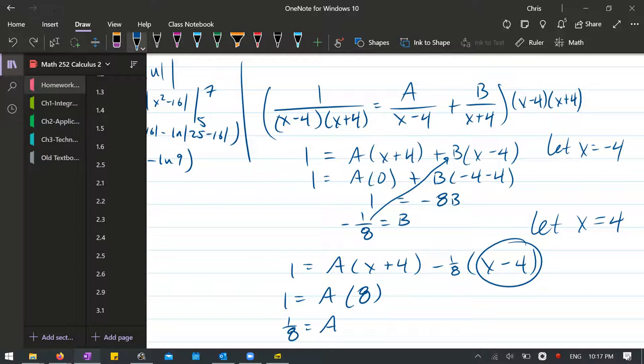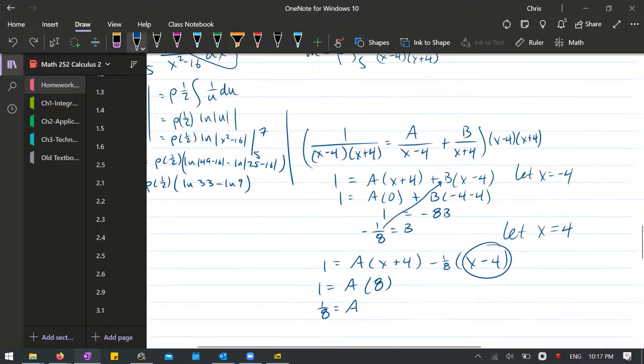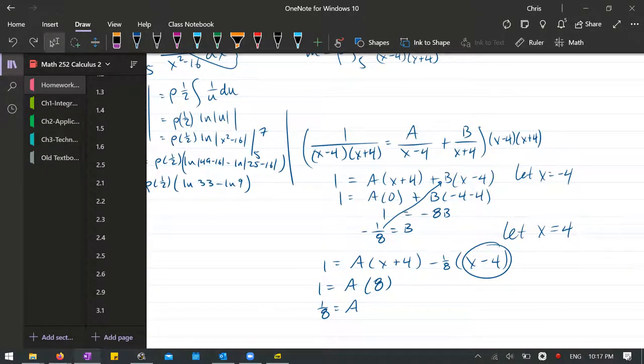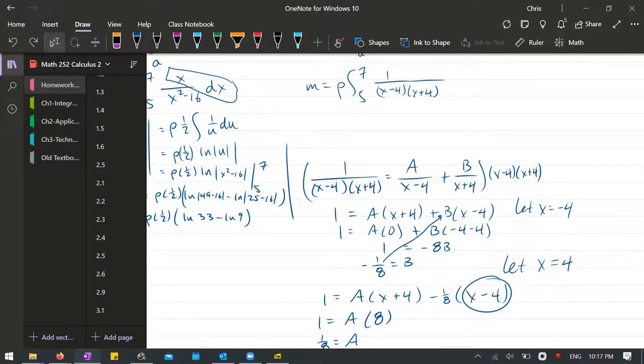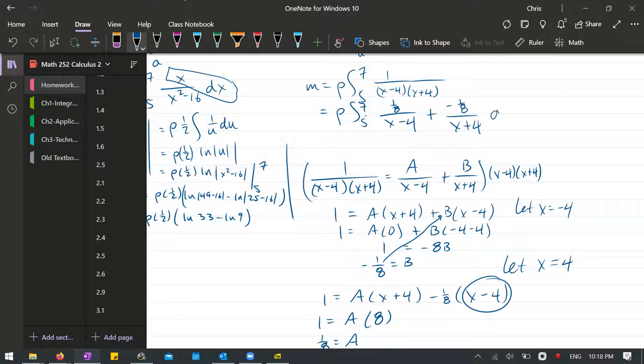So I'm ready to take these values. Our b was negative 1 eighth. It will be a was positive. So it's 1 eighth over x minus 4 plus negative 1 eighth over x plus 4 dx.